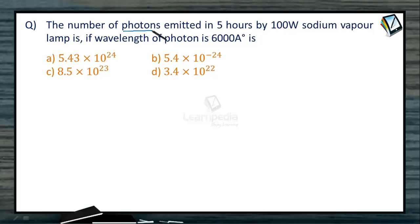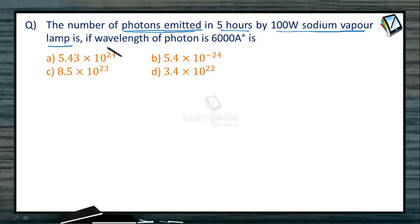The number of photons emitted in 5 hours by a 100W sodium vapour lamp is how much, if the wavelength of the photon is 6000 angstrom units?